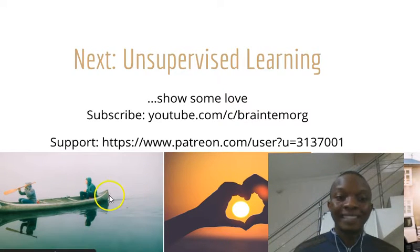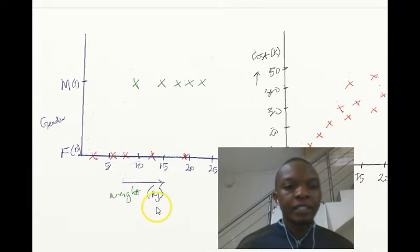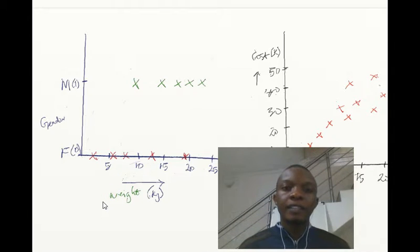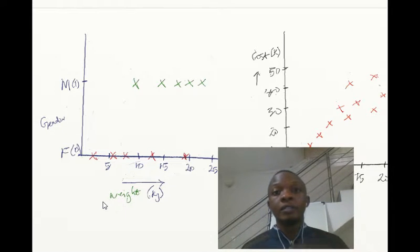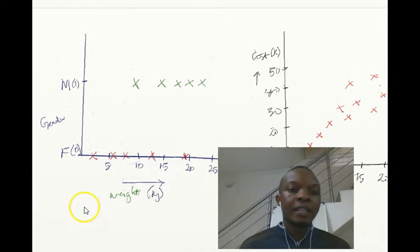Here we are in the first problem, a classification example. Let's assume we're trying to find - maybe we suspect or found a relationship between the weight of a certain goat. Assume the goat species are of the same age and species.